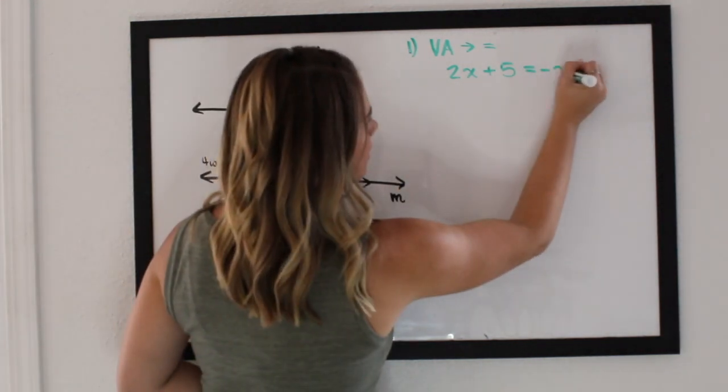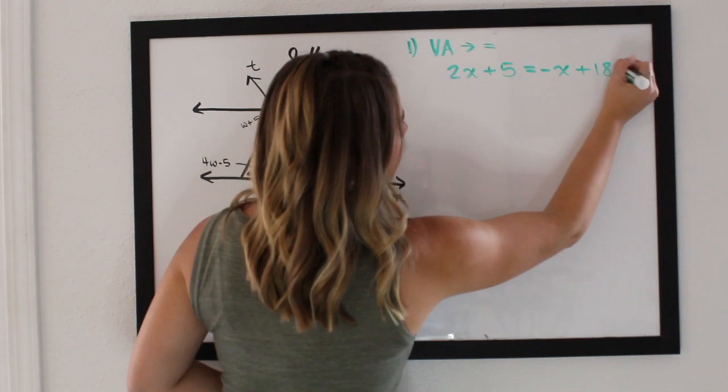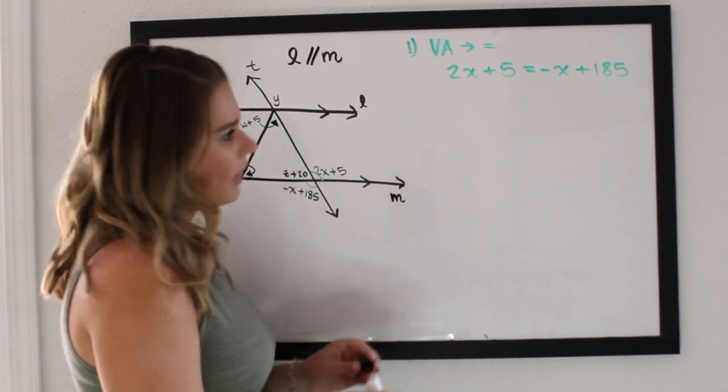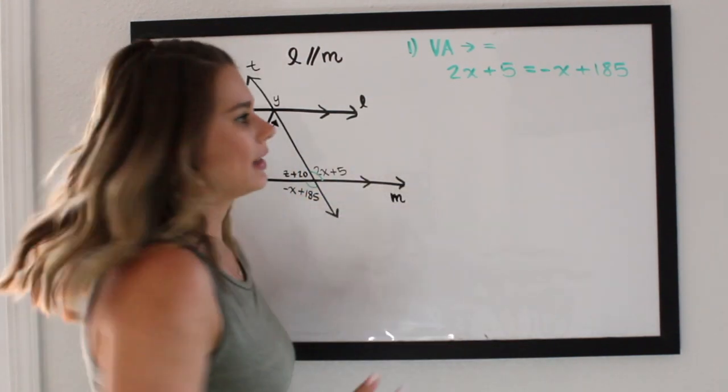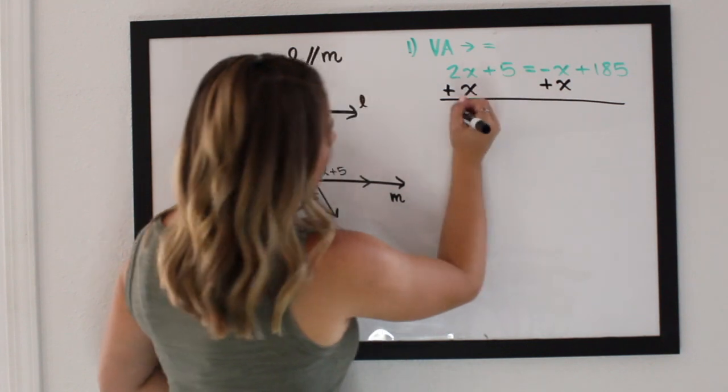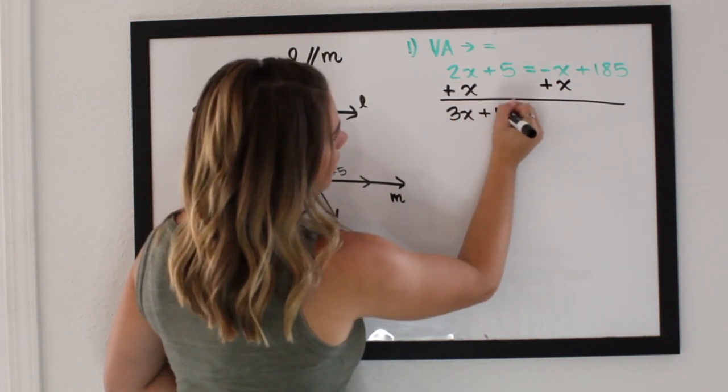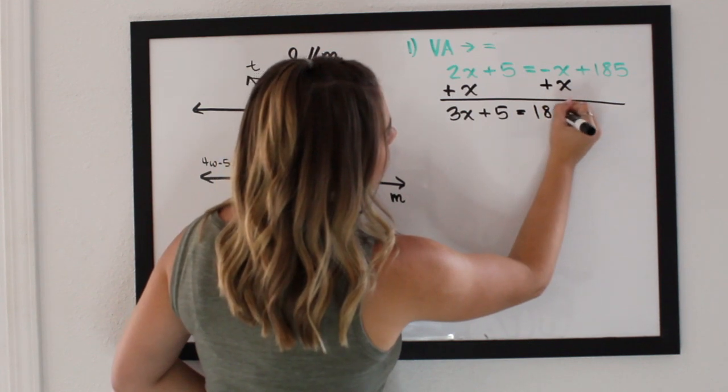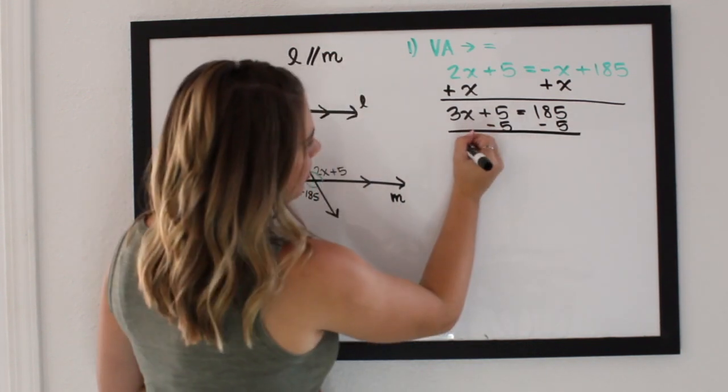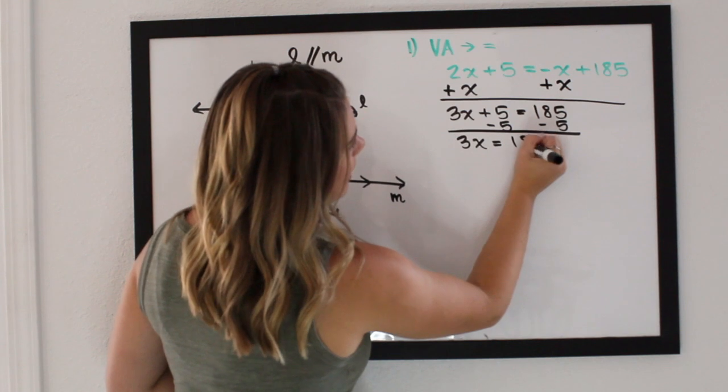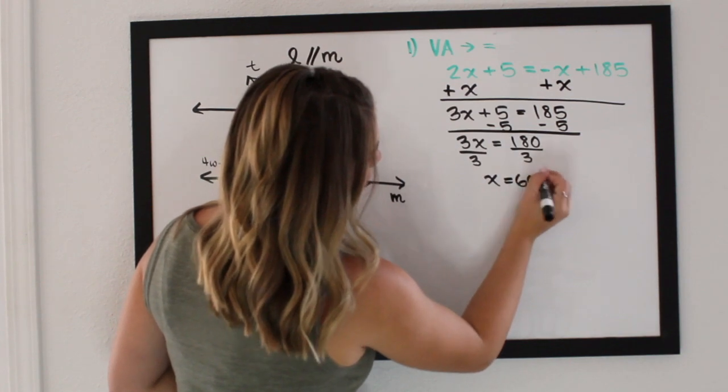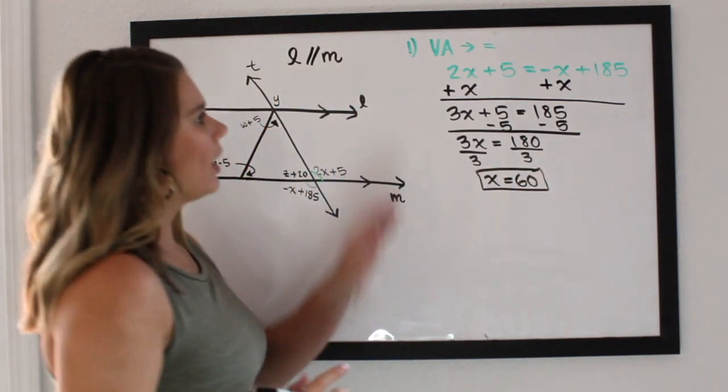So 2x plus 5 equals negative x plus 185. I'm going to solve this in black just because it's a little easier for you to see on camera. I need to solve this for x, so I'm going to add x to both sides. I end up with 3x plus 5 is equal to 185. I'm going to subtract 5 from both sides. I end up with 3x is equal to 180. Divide both sides by 3, x equals 60.